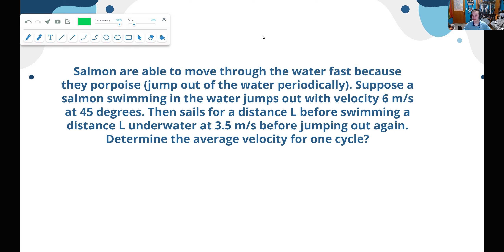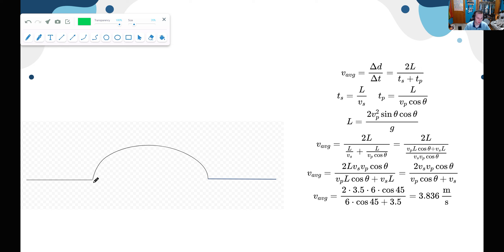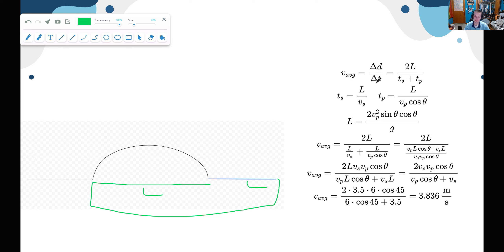Moving on to the fish problem. Salmon are able to move through water faster because they porpoise — they swim underwater, jump out, then continue swimming. Suppose a salmon jumps out at 6 meters per second at 45 degrees, sails a horizontal distance L through the air, then swims a distance L underwater at 3.5 meters per second before jumping again. We want the average velocity for one complete cycle.